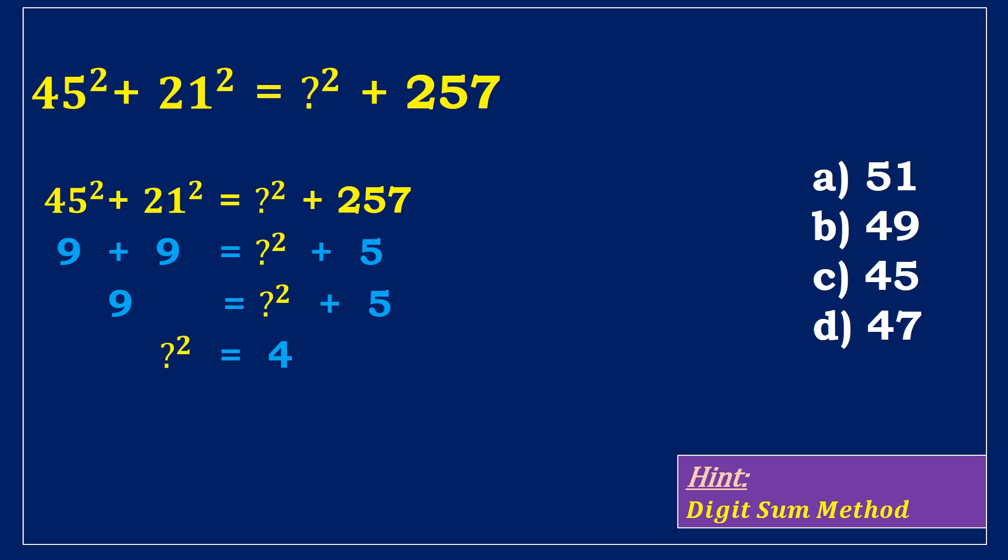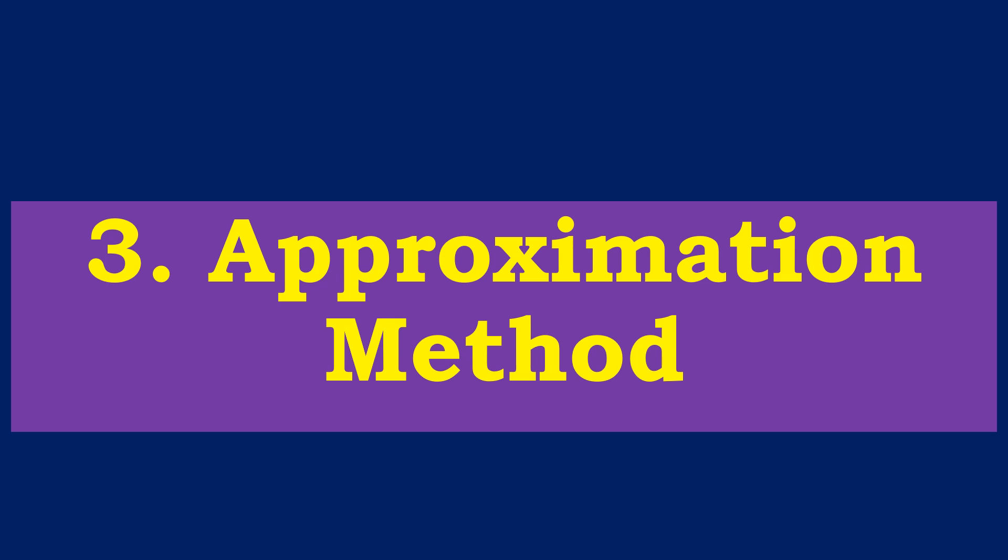Then the final value is 2. However, this is not a result. Apply the digit sum technique to all the result options. The digit sum value of option D is 2, which is the same number obtained previously. Therefore, option D is the final answer.